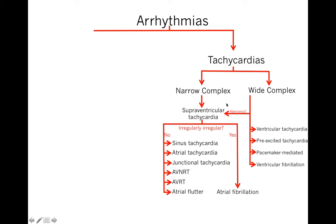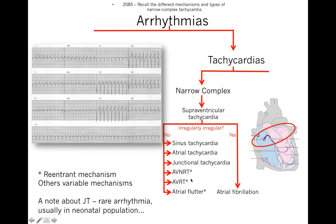There are multiple types of narrow complex tachycardias. We call them SVTs because they're coming from the atria — supraventricular tachycardias, above the ventricles. If it's an irregularly irregular tachycardia, the main cause is atrial fibrillation. If regular, it could be sinus tachycardia, atrial tachycardia, junctional tachycardia, AVNRT, AVRT, or atrial flutter. Junctional tachycardia is a rare arrhythmia, more common in neonates, and will not be discussed today.